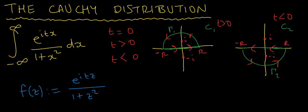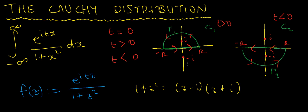The poles of this function are where 1 plus z squared vanishes. I know that 1 plus z squared is the same as (z minus i)(z plus i), so I'm going to have poles at z equals i and z equals minus i. I've indicated these on the diagram as red dots. In each of the two contours, only one of the poles lies inside, and I'll use the residue theorem to determine each residue and therefore the value of each contour integral.